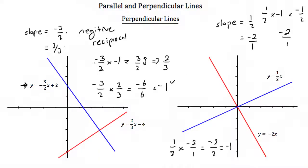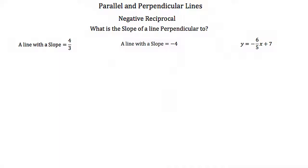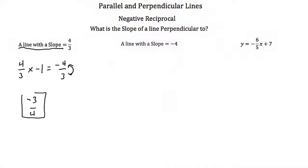So remember, if you ever have perpendicular lines, the slopes are the negative reciprocals of each other. Let's practice: what is the slope of a line perpendicular to a line with a slope of 4 thirds? We take the negative reciprocal — multiply 4 thirds by negative 1 to get negative 4 thirds, then swap the numerator and denominator to get negative 3 fourths. We can double check: negative 3 fourths times 4 thirds gives us negative 12 over 12, which is negative 1. So we did that right.